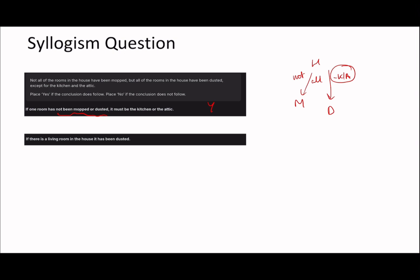'If there is a living room in the house, it has been dusted' — yes, because everything else is dusted except the kitchen and the attic. With these question sets, there's normally always one question that catches people out. It's about asking yourself what you did wrong and how you should have switched it up. Thank you for watching — I hope this video was helpful even if it's not the normal style. Please let me know what you'd like to see and I'll see you in the next video.